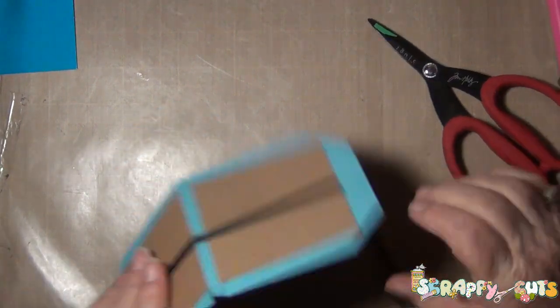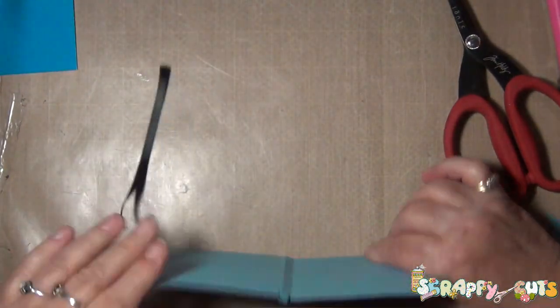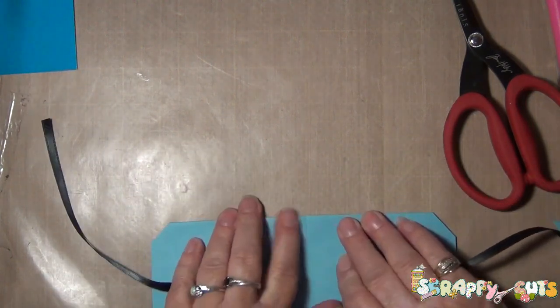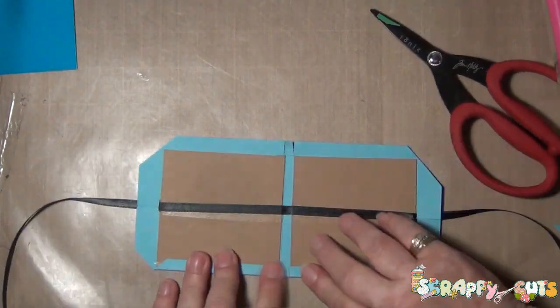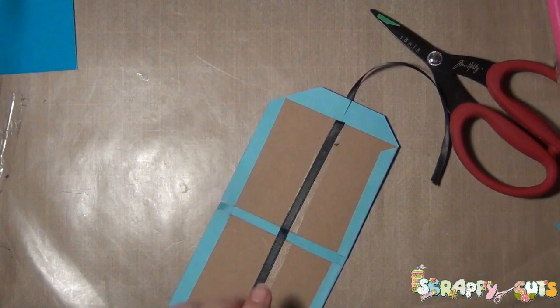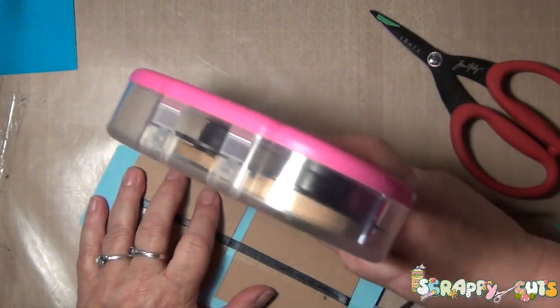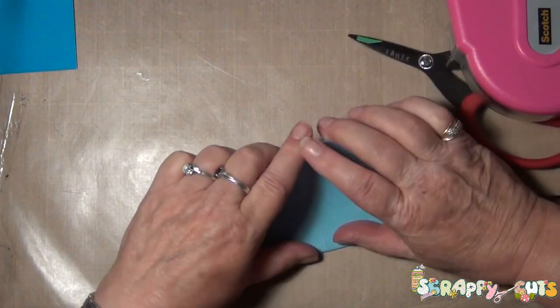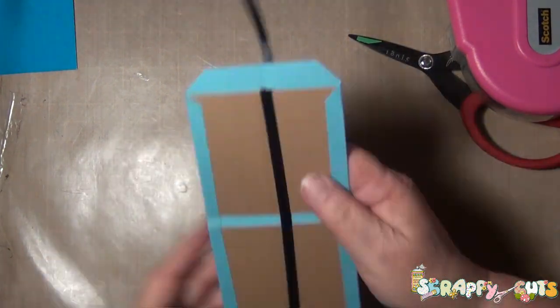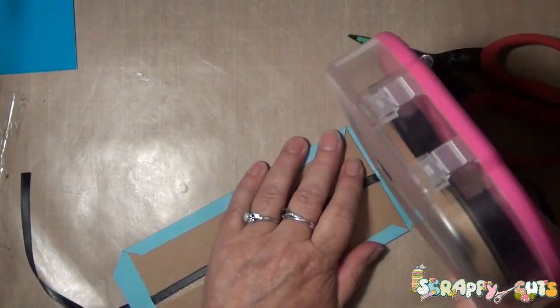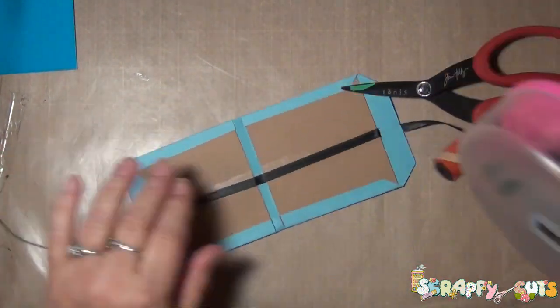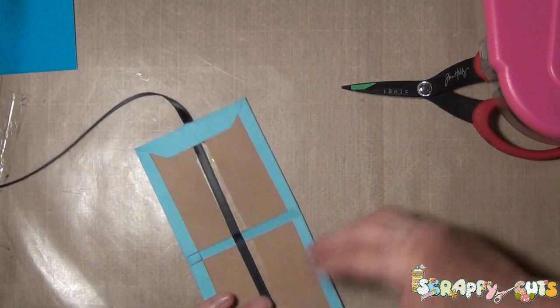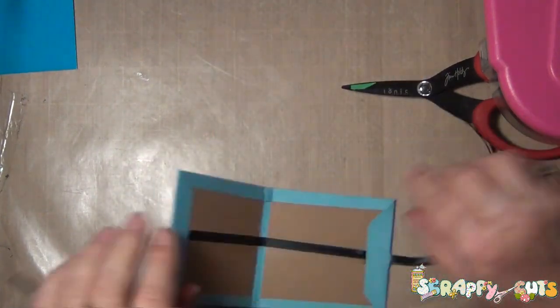And then just bend it over. That seems to be the quickest and nicest way of getting the paper to fold over. And then repeat on the other side. Doesn't that look nice? And then you're going to do the same thing on each end, being careful not to get the end of the ribbon into your adhesive.